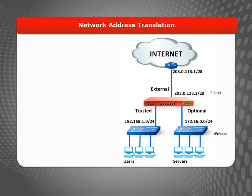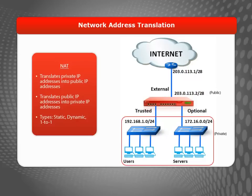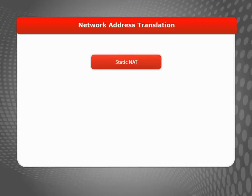Before you create any policies, you need to have a basic understanding of NAT, or Network Address Translation. NAT is a feature that lets you stretch the number of computers able to work off of a publicly routable IP address, and to hide the private IP addresses of hosts on your LAN. There are three types of NAT: static, dynamic, and one-to-one.